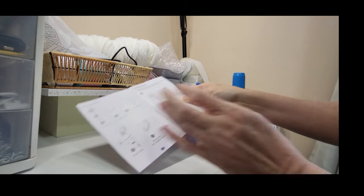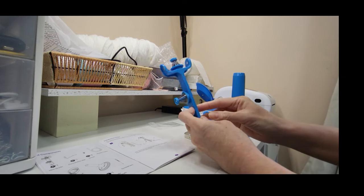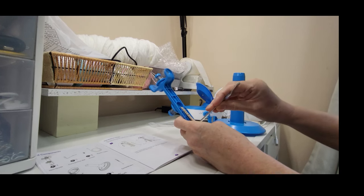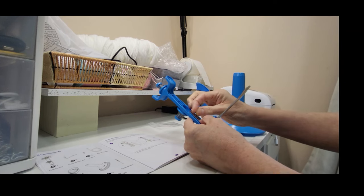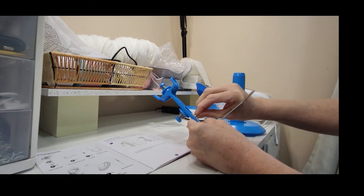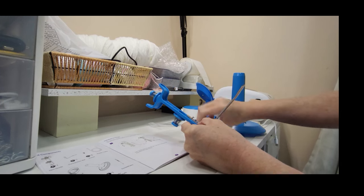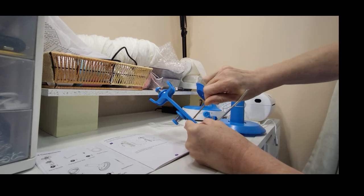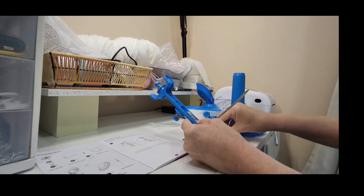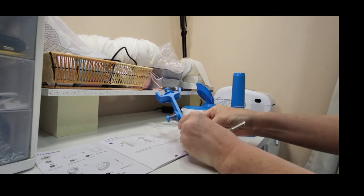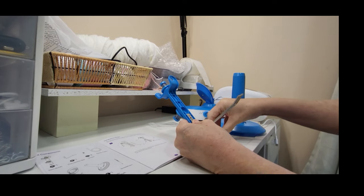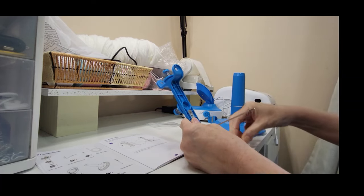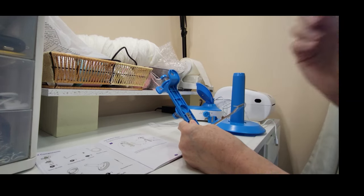The first thing it says is you have to take your yarn guide and you have to put this piece on here and screw these in. If you've got arthritis or something, this is going to be a little difficult, so you might need some help. The screws are very tiny, so I'll be back when I get that in.